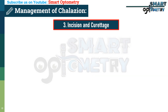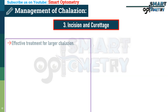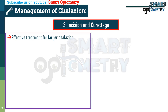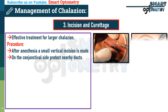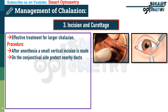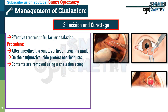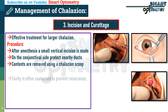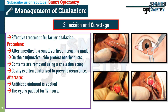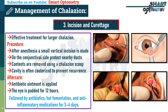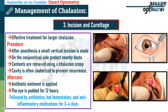Incision and curettage is the most effective treatment for larger or persistent chalazia. After local anesthesia, a small vertical incision is made on the conjunctival side to avoid visible scarring and protect nearby ducts. The contents are then removed using a chalazion scoop, and the cavity is often cauterized to prevent recurrence. After care: antibiotic ointment is applied and the eye is padded for 12 hours, followed by antibiotics, hot fomentation, and anti-inflammatory medications for 3–4 days.